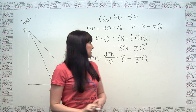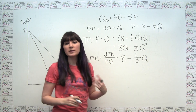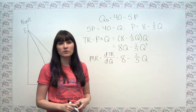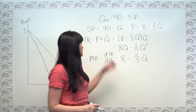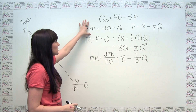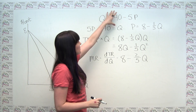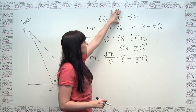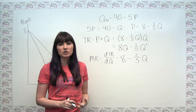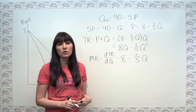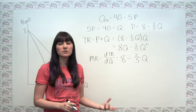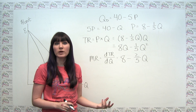We can think about how to get from this demand curve to our marginal revenue curve. The first helpful step is to rearrange things algebraically into what we call the inverse demand curve — that's just a fancy way of saying solve for price.